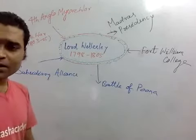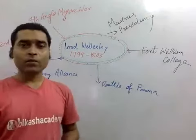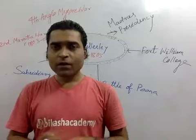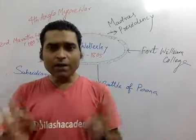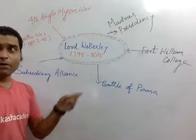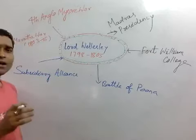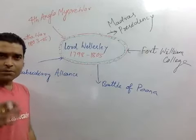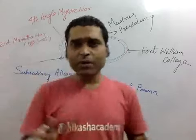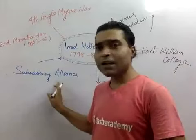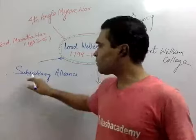The first thing to understand is subsidiary alliance. In British times, the princely states were in a desperate situation for their protection — they needed an army. The army would be provided by Lord Wellesley, or simply the British, stationed in their country. But the princely states had to maintain that army in terms of salary and other requirements. If the princely states failed to maintain the army, then under subsidiary alliance those states would come under the British Empire, under the East India Company.